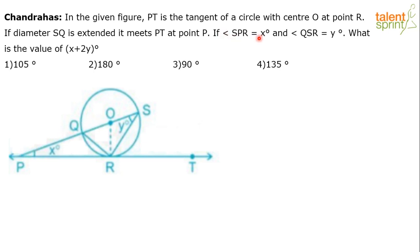If angle SPR equals X degrees and angle QSR equals Y degrees, we have to find out the value of X plus 2Y degrees.